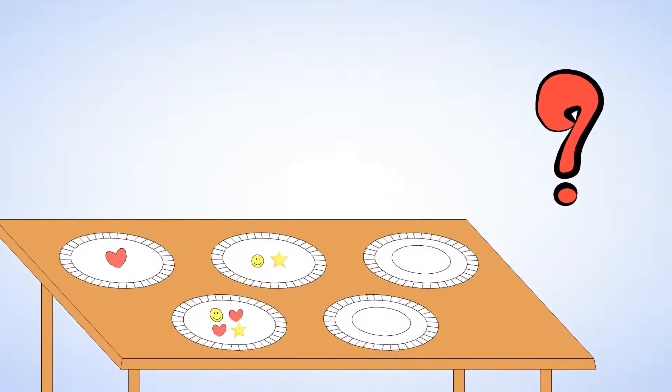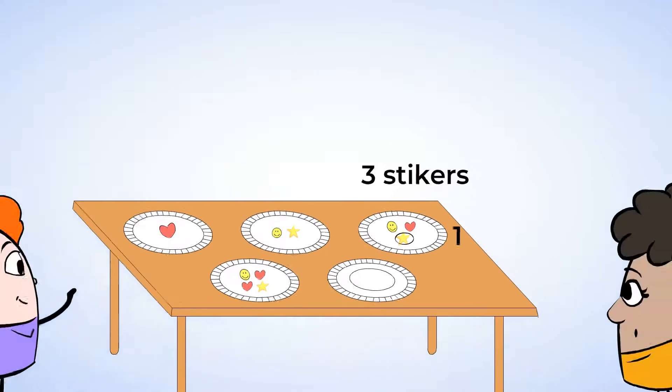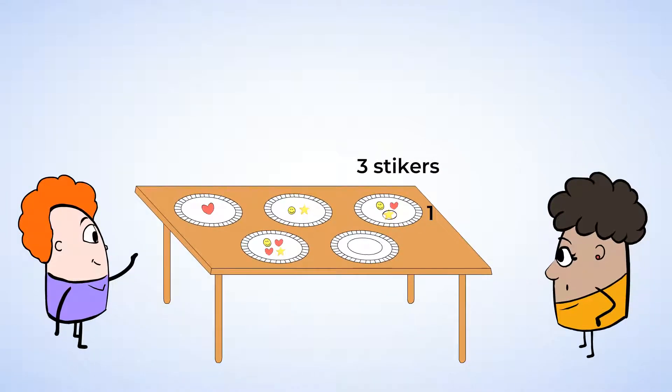And done. How many stickers did you see now? Think about the number of stickers you saw and let's check. Okay. There were three stickers on this plate. Two on the top and one on the bottom. That makes it easier to see how many there are.